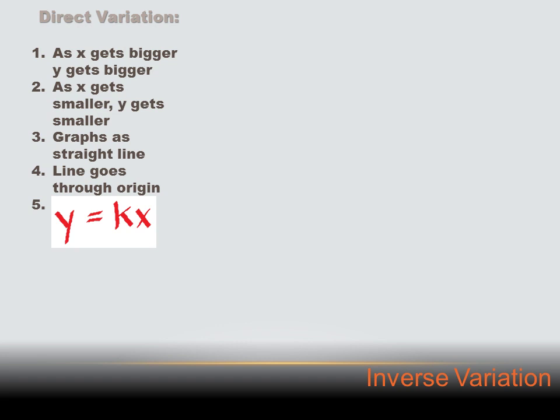The rules for direct variation: one, as x gets bigger, y gets bigger; two, as x gets smaller, y gets smaller; three, when we graph a direct variation we get a straight line; four, that line goes through the origin; and five, the formula is always in the format y equals k times x.